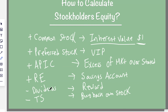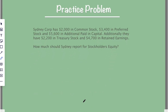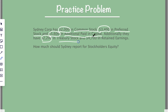So that's the basic calculation. Let's move into a problem to make everything more clear. Sydney Corp has $2,000 in common stock, $3,400 in preferred stock — I like to circle the numbers and underline the accounts to keep everything in line — $5,600 in APIC, $2,200 in treasury stock, and $4,700 in retained earnings. What do you report for equity?